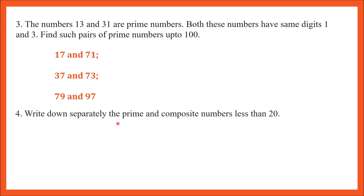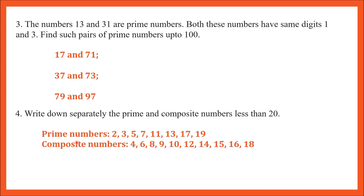Question number 4: write down separately the prime and composite numbers less than 20. Prime numbers less than 20 are: 2, 3, 5, 7, 11, 13, 17, and 19 — these are not divisible by any other number. Composite numbers are: 4, 6, 8, 9, 10, 12, 14, 15, 16, and 18 — these are divisible by numbers other than themselves.